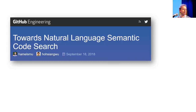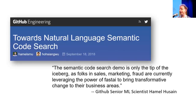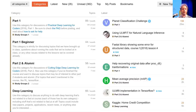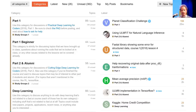One of our alumni, Hamel Hussain, built a new system for natural language semantic code search, available on GitHub, where you type English sentences and find snippets of code that do what you ask. That's being built with the fast.ai library using techniques you'll learn in the next seven weeks, currently part of their experiments platform.